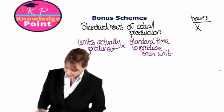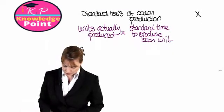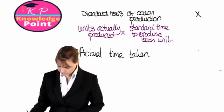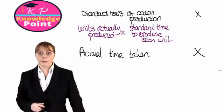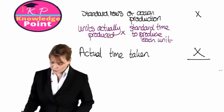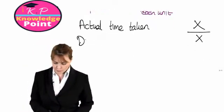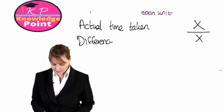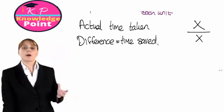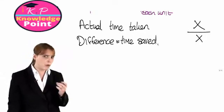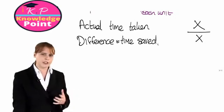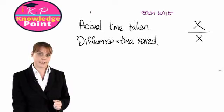So how many units have they actually produced and how long would we have expected this to take? Once we have calculated that, then we look at the actual time taken. So the actual number of hours they have spent working on these units. We just compare these two figures and the difference between the two is the time saved. We will work out how much time have they saved by being more efficient than we expected them to be. And we will probably pay them a certain percentage of their basic rate for each hour they have saved.